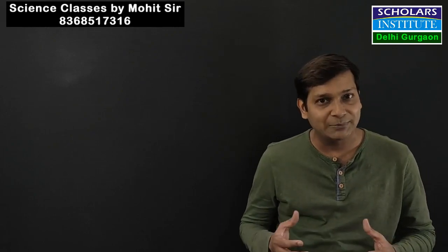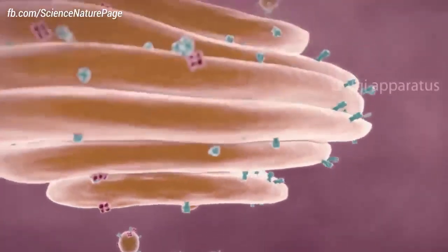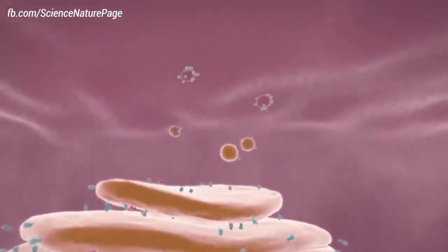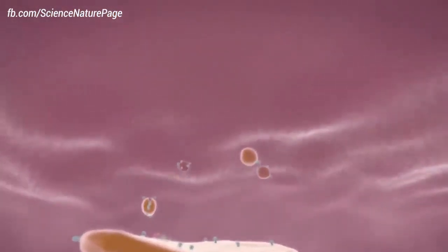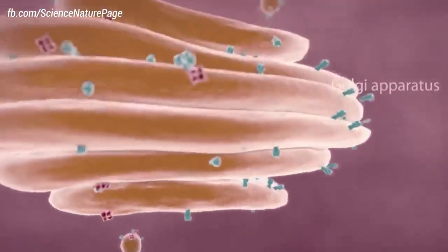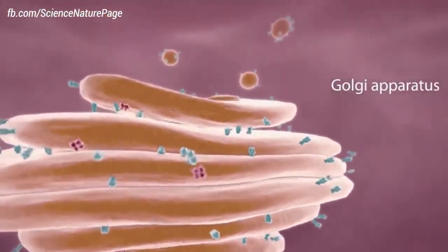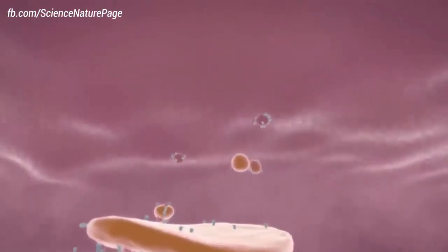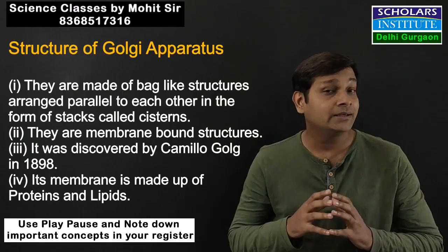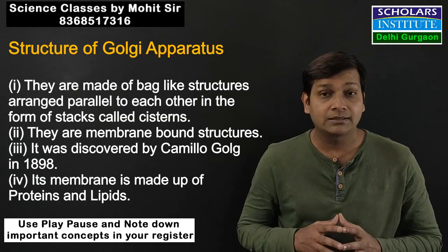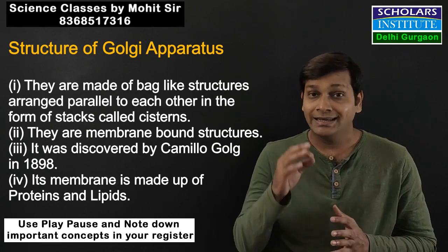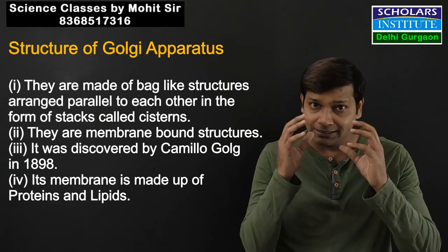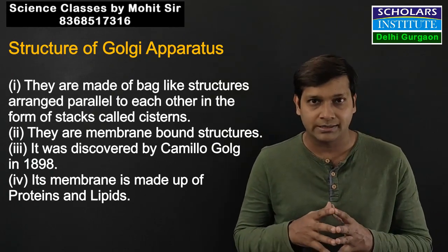Now let us move to the Golgi apparatus. The Golgi apparatus consists of bag-like structures stacked one on top of each other — bag-like structures present one over each other. This structure is visible within the cell.